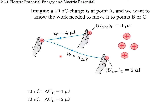On the other hand, we can move the charge from point A to point C by spending 6 microjoules of work, in which case this charge will have an electric potential energy of 6 microjoules. So moving a 10 nanocoulomb charge: going to point B gives a potential energy of 4 microjoules, and going to point C gives 6 microjoules.